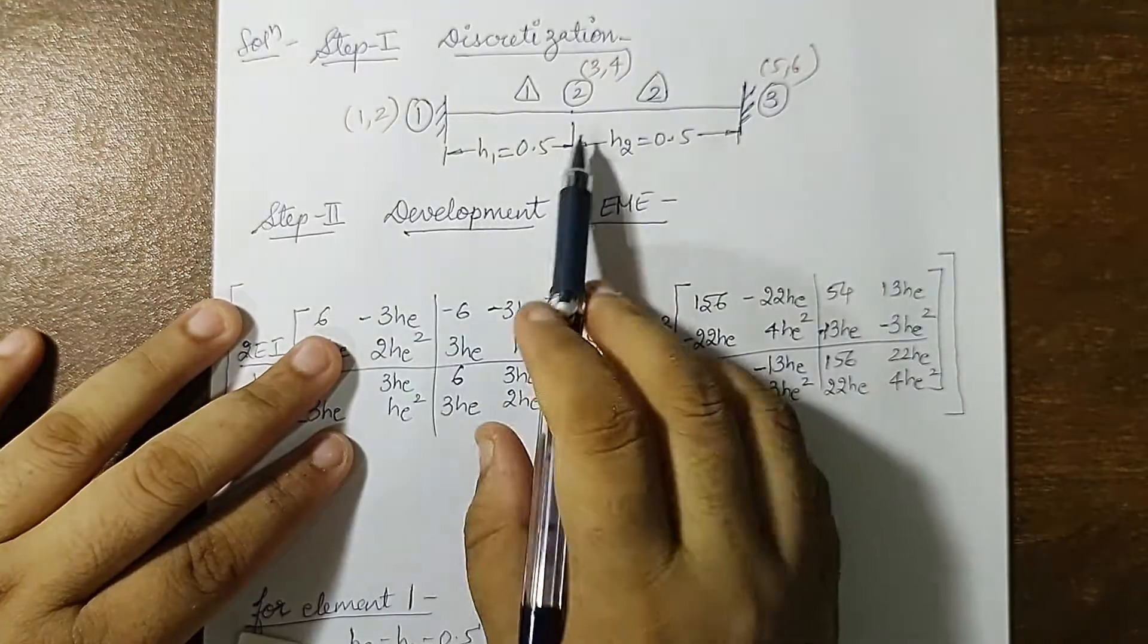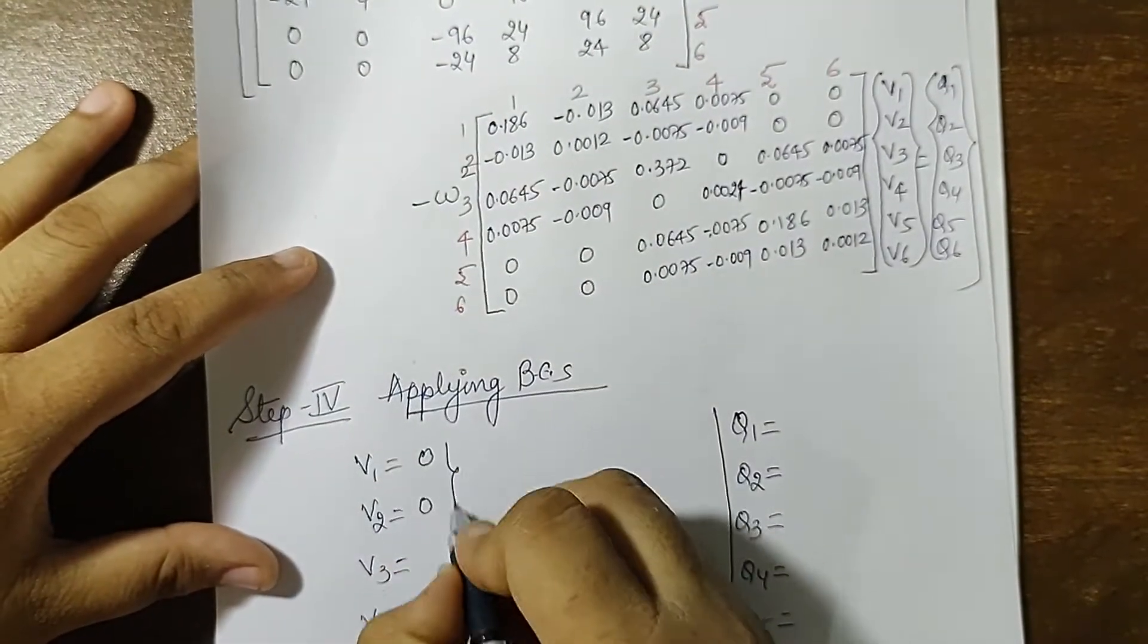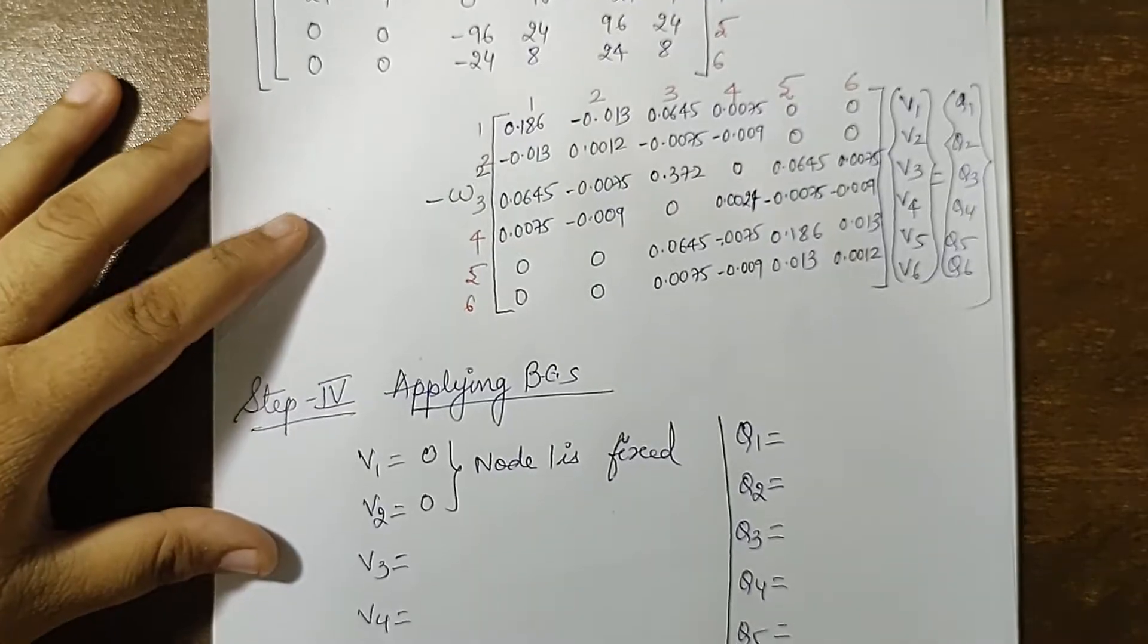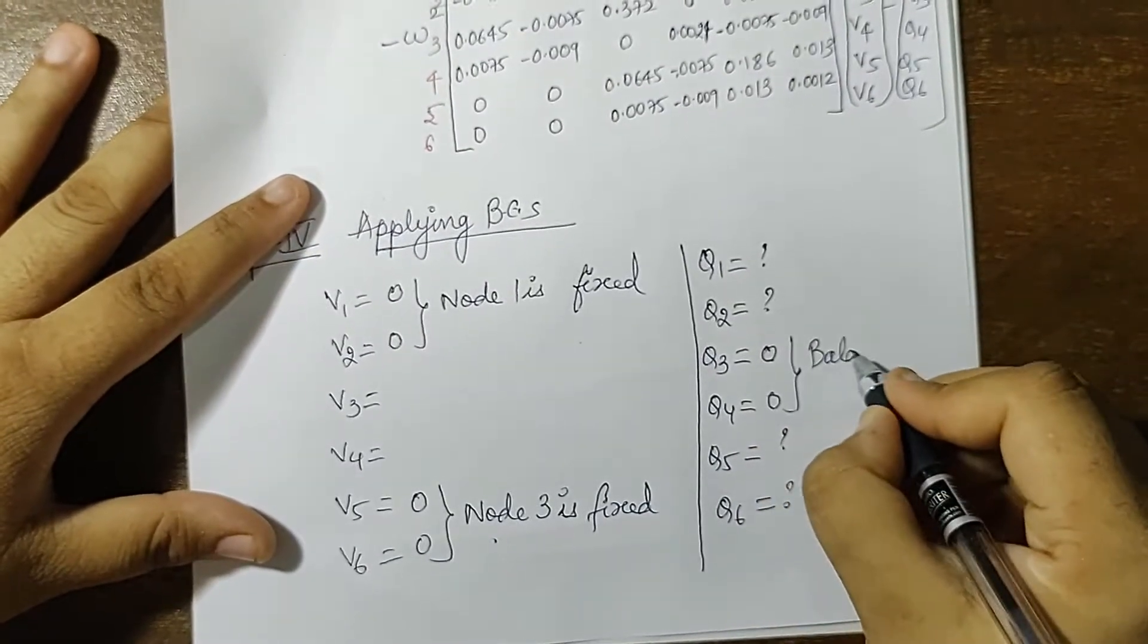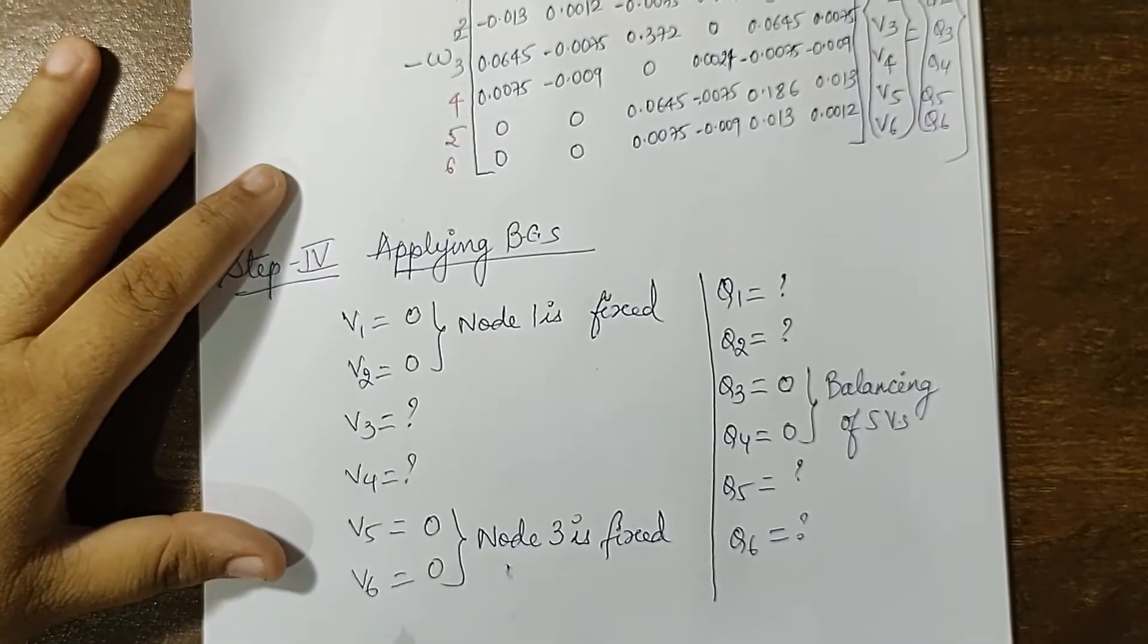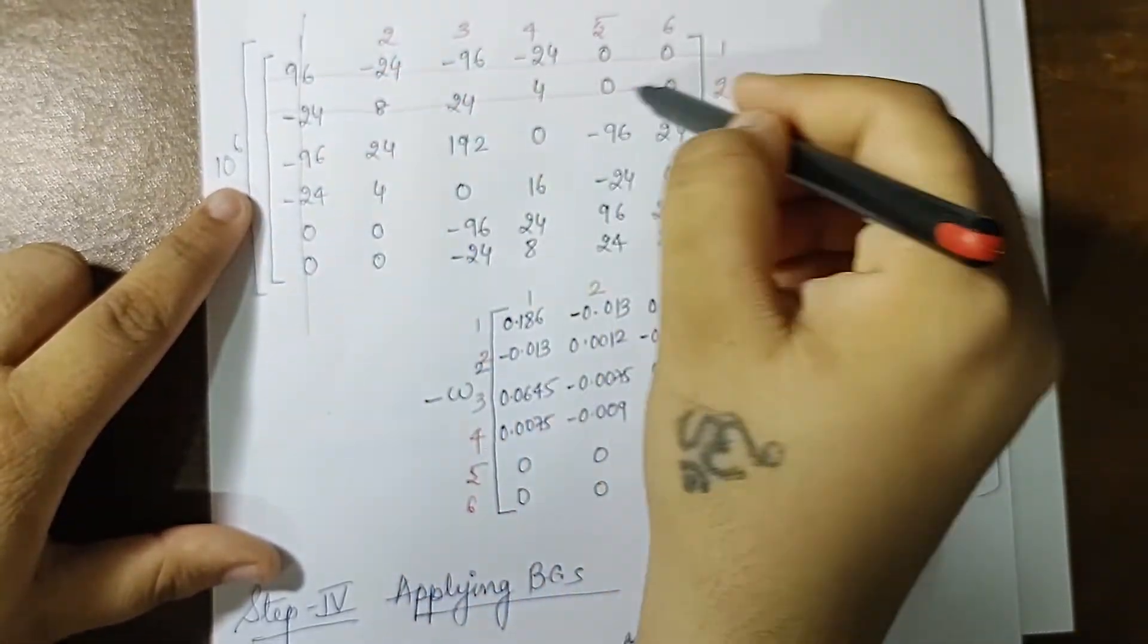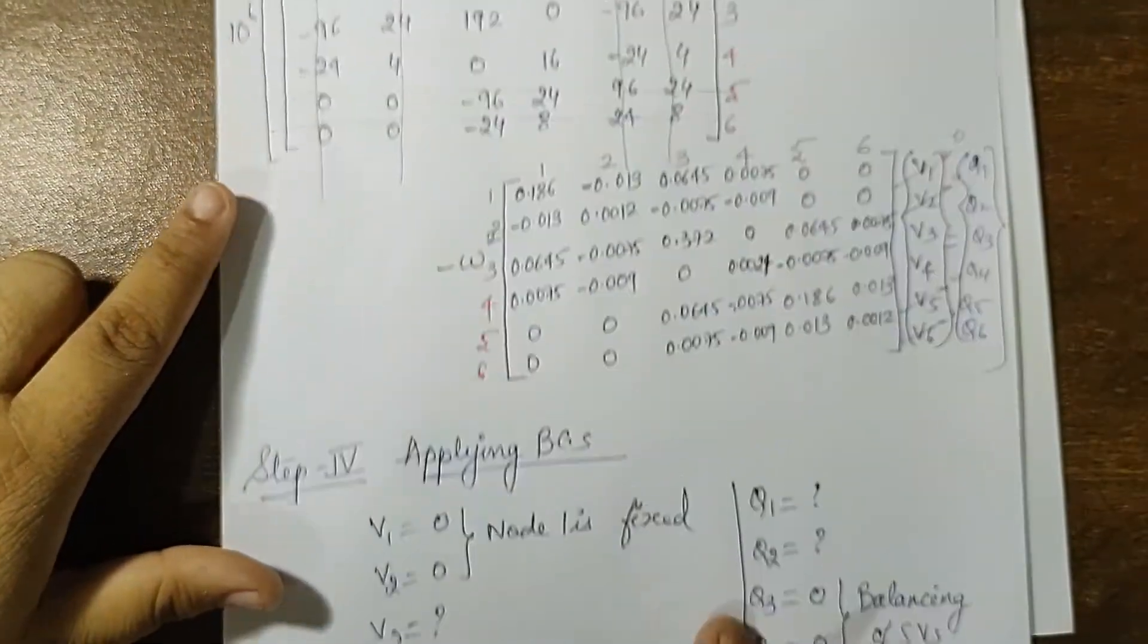Now I will write the boundary conditions. If you look at this diagram, node 1 and 3 are fixed so there will be no deflection and slope at the first node, so I'll write 0 and 0 here. Node 1 is fixed. Same way V5, V6 is 0, node 3 is fixed. Now since these are 0, these have to be question mark and these two I'll take as 0. This is called balancing of secondary variables, so these two will become question mark. Now if V1, V2, V5, V6 are 0, then I can easily neglect my first row first column, second row second column, fifth row fifth column and sixth row sixth column. Similarly I can do it for this matrix.